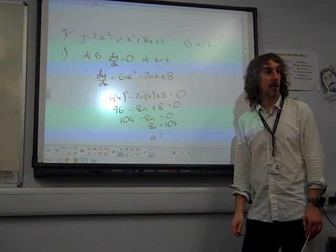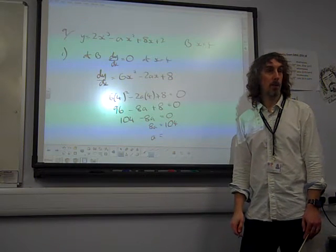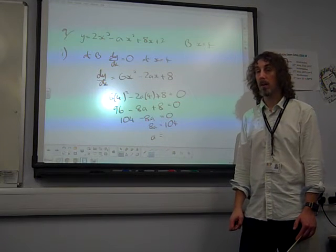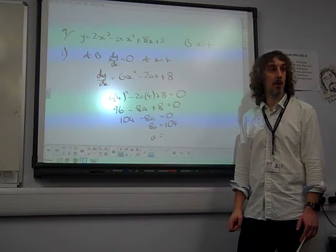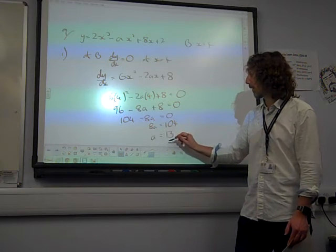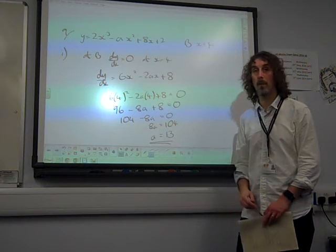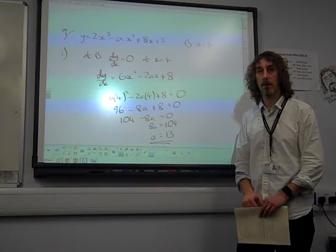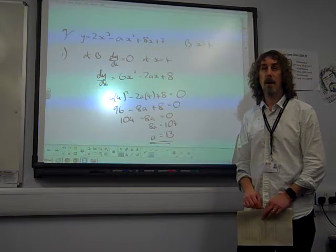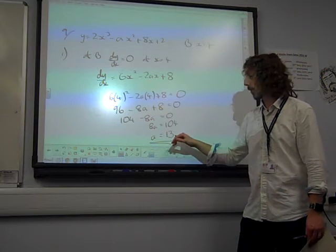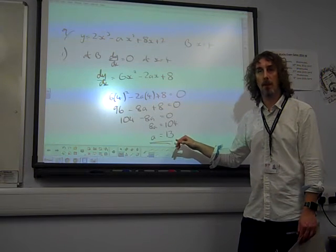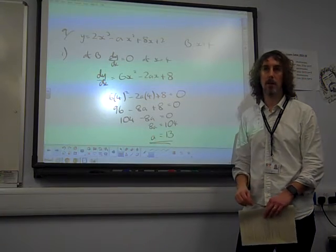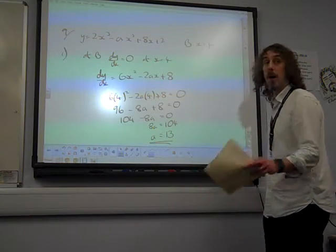A is 104 over 8, which would be 52 over 4, so 26 over 2, so 13. That's the answer that you get. It's amazing how many people ended up 1 or 2 numbers out there, with a 14, with a 12, with an 11. Okay, part 2.